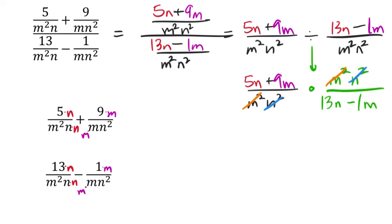Now I will rewrite this as a new fraction, but hopefully a little bit more simplified. We got that 5n plus 9m that was left over from the numerators, because that didn't have a match here in the denominator. And then the denominator that was left over was that 13n minus 1m.